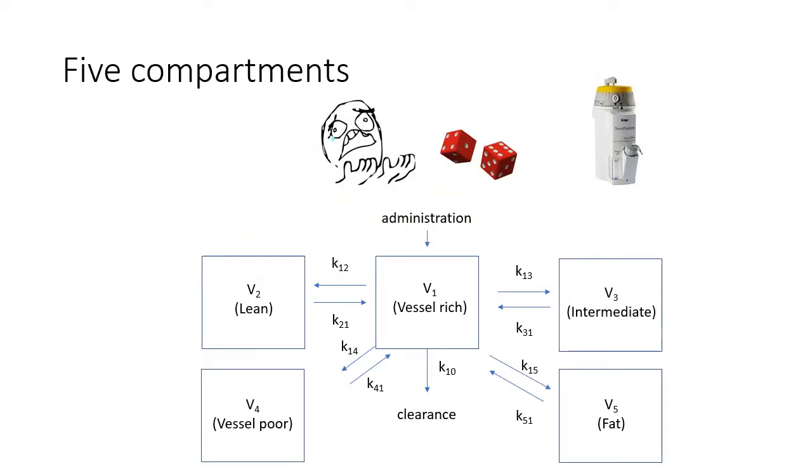The kinetics of volatile anaesthetics has been described using a five compartment model, or a four compartment model. That is, there is a vessel-rich group, a lean group also called a muscle group, an intermediate group which is thought to be the fat surrounding very well perfused viscera like the heart and the kidneys, a vessel-poor group containing tissues like cartilage which are poorly perfused, and a fat group.